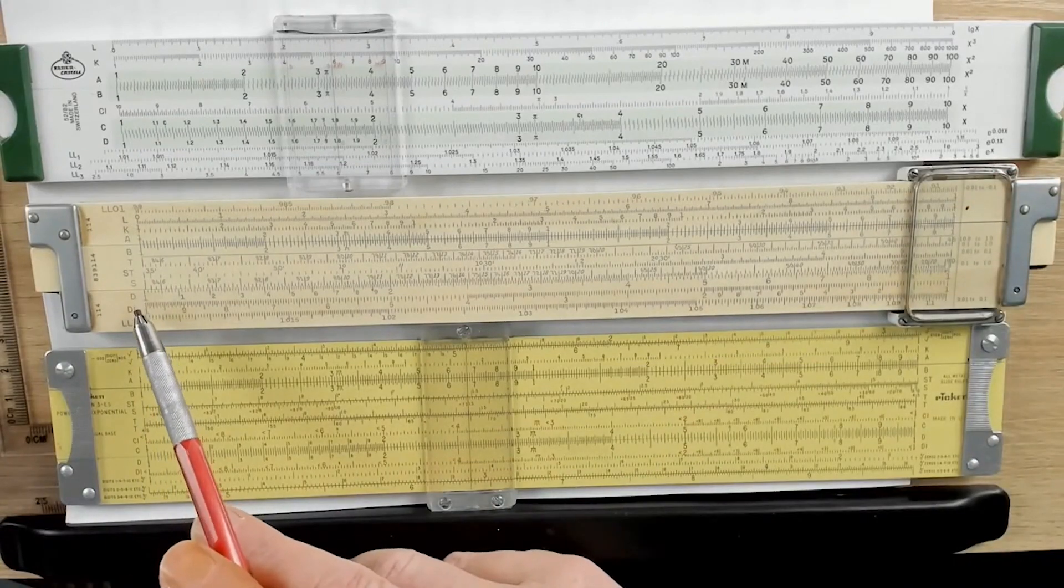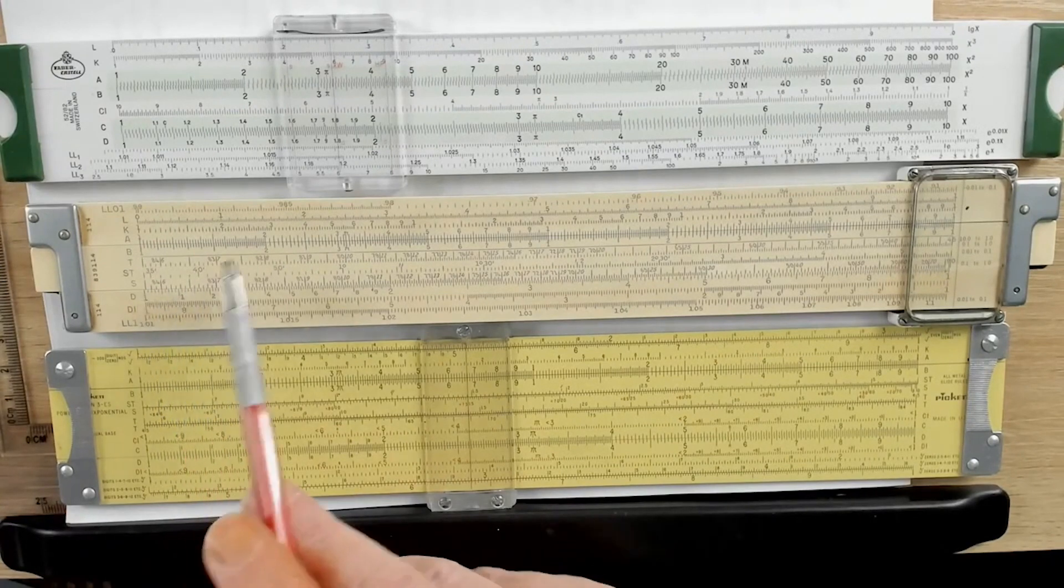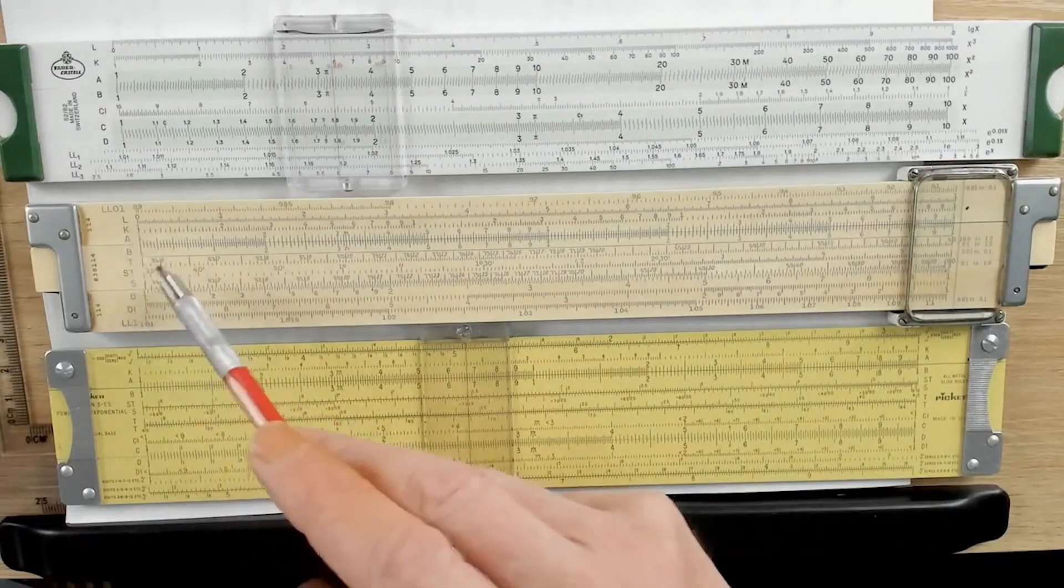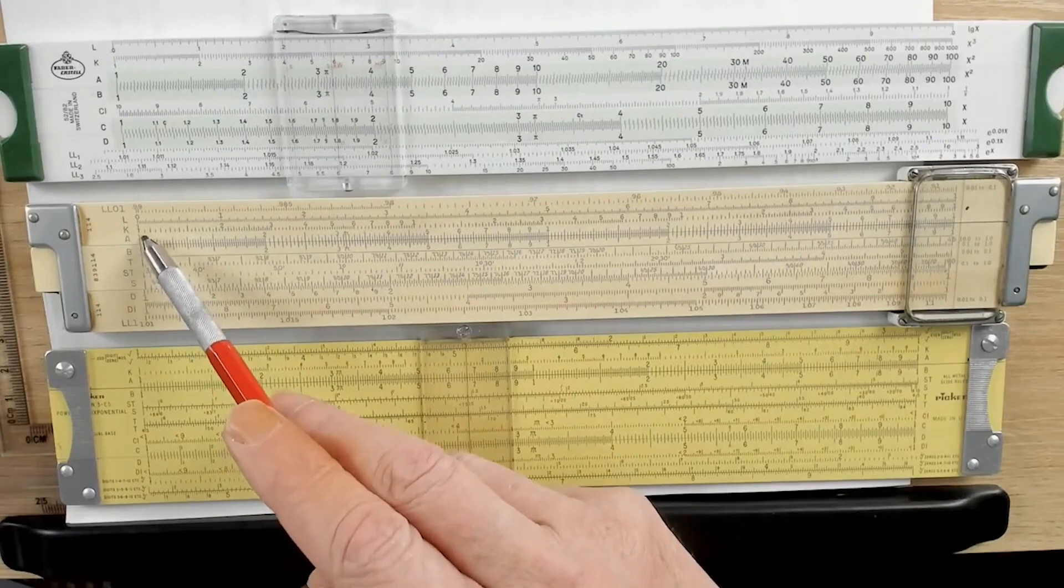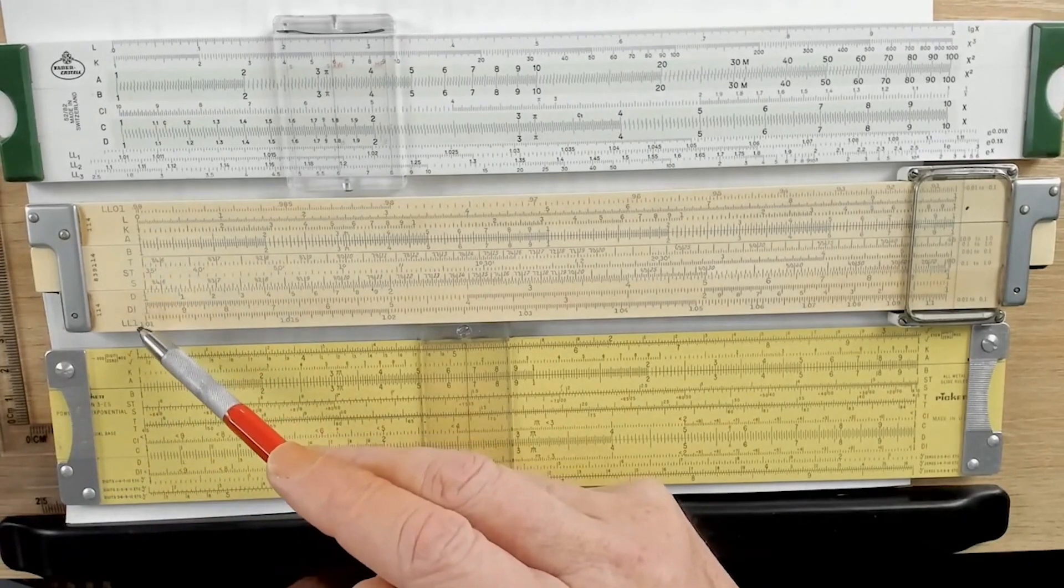Now, you'll see right here we have the D scale. We don't have a C scale on this because it's on the other side of the slide, and this has got a reversible slide as well, and it's got an A and a B scale. There's the K scale, the L scale, and then here are some of the inverted scales.